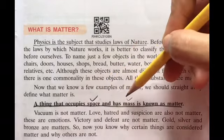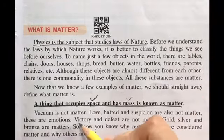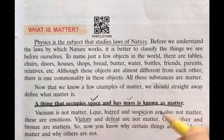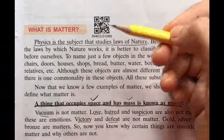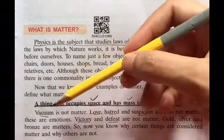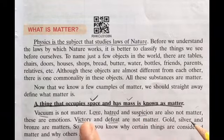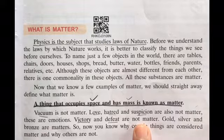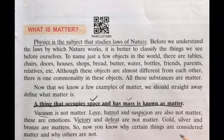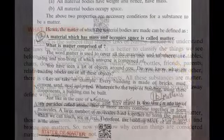Now there are a few things which are not included as matter. For example, victory, defeat, love, hatred, suspicion, and vacuum. Vacuum means nothing in which there is no gas or air, only empty space. Vacuum has no mass. Love, hatred, and suspicion are emotions. Victory and defeat are also emotions only. Emotions do not have any mass and they do not occupy any kind of space, so they are not matter.